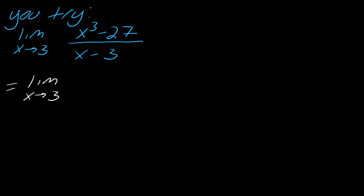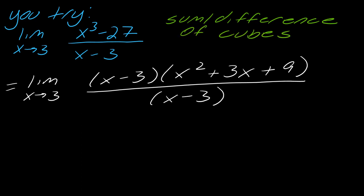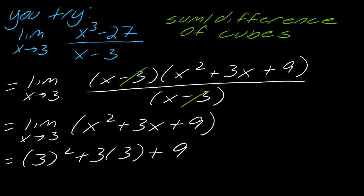This one can be a little tricky to factor — it uses what's known as the difference of cubes. You can look up the sum or difference of cubes formula; it's a really common type of problem in calculus but easy to forget. After factoring, the (x minus 3)'s drop out, and I'm left with the limit as x approaches 3 of x squared plus 3x plus 9. Since that's a polynomial, I plug in 3: 3 squared plus 3 times 3 plus 9 gives 9 plus 9 plus 9, which equals 27.